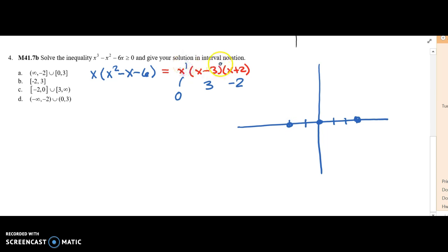Each one of them has odd multiplicity, so we cross at each one. And our end behavior is x cubed, so low to high.